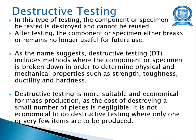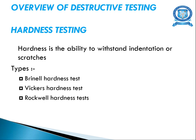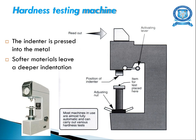Destructive testing is very suitable and economical for mass production because the cost of pieces is negligible, but it is not economical when only a few items are to be produced. In hardness testing, you find the hardness of the metal — that is, the ability to withstand indentation or scratches. There are three types of hardness tests: Brinell hardness test, Vickers hardness test, and Rockwell hardness test.